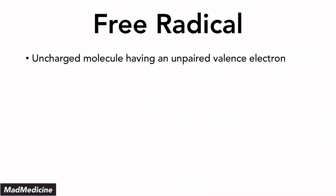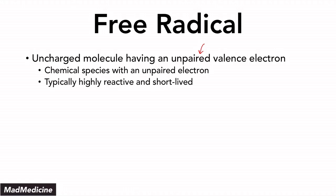Free radicals are uncharged molecules that have one or more additional unpaired valence electrons. These are chemical species you need to be aware of because they play a big role not just physiologically, but also pathologically. These molecules are highly reactive — that's why they're so dangerous — but they're also short-lived, meaning they're not going to hang around for long. But because they're so highly reactive, they have the ability to cause a lot of injury.